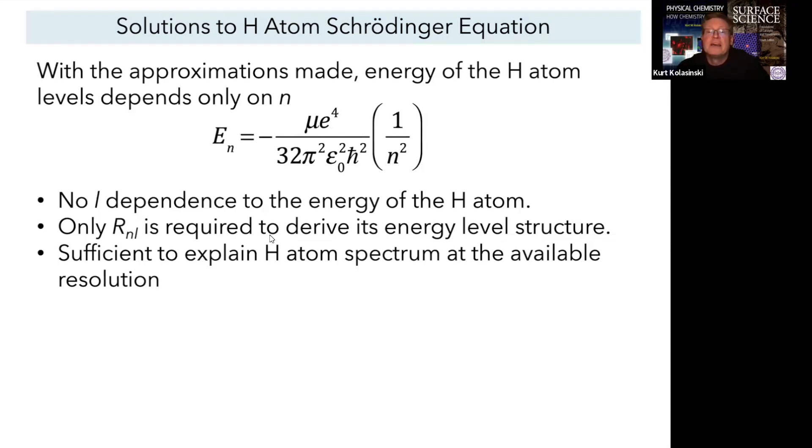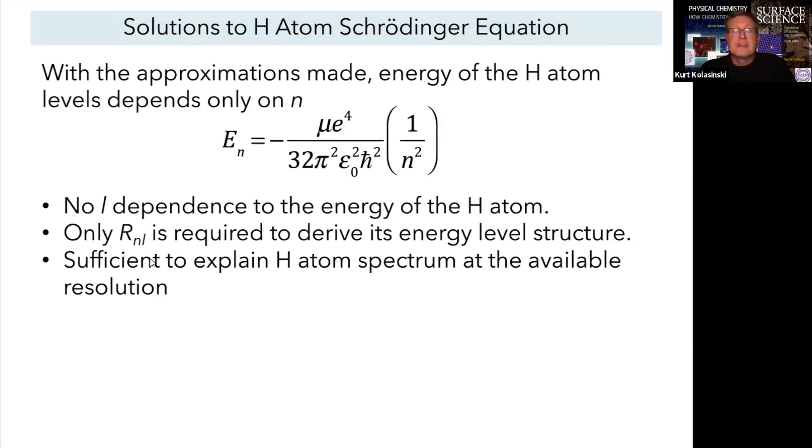Only the radial term is required to derive the energy level structure. This is actually why the Bohr model worked. The Bohr model relies on just a radial term, and even in the Schrödinger equation we find the same thing. Up to now this was a sufficient explanation to explain the hydrogen atom spectrum at the time that it came out, to the available resolution. It looked like the system had been solved.